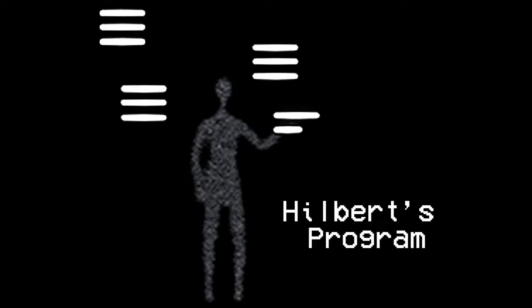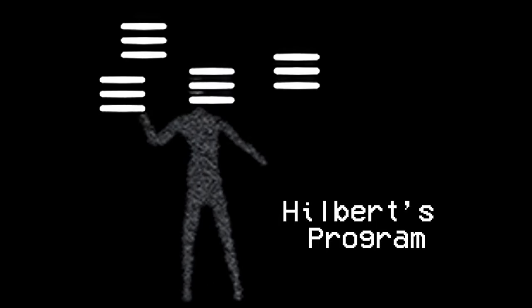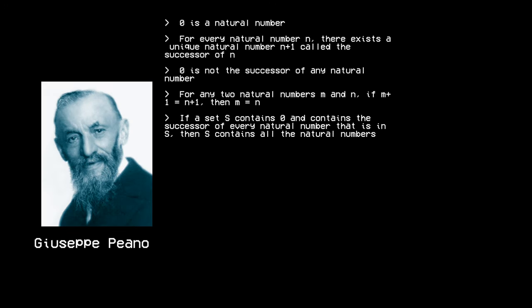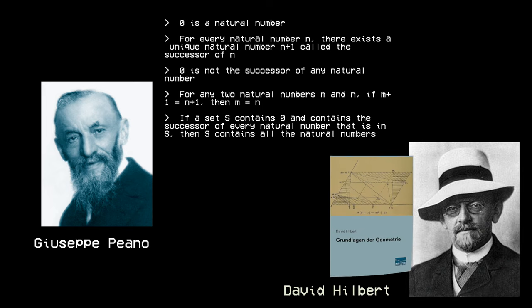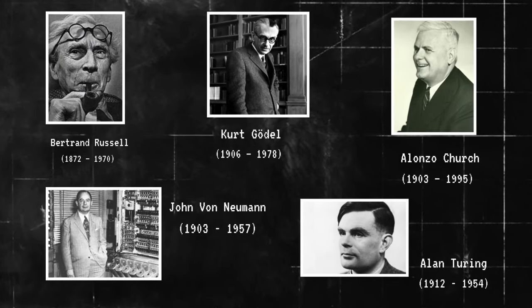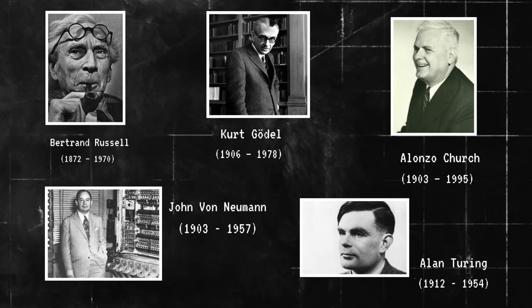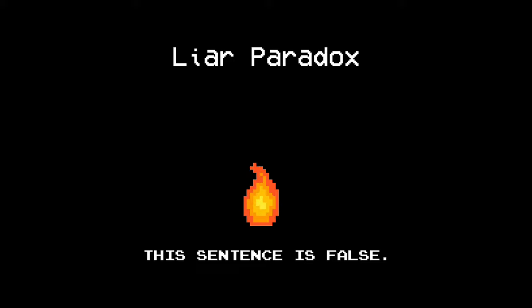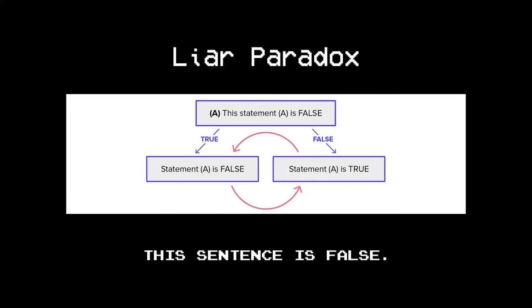Rebuilding mathematics in a way that satisfied the requirements of completeness and decidability became known as Hilbert's program. In 1889, Giuseppe Peano formulated axioms for arithmetic, and David Hilbert did the same for geometry. During the era of Hilbert's program, logic was marked by a tumultuous cycle of creation and destruction, where one logician would construct an elaborate system only for another to dismantle it. The preferred method of destruction involved crafting self-referential, paradoxical statements that exposed inconsistencies in the axioms, such as the liar's paradox, exemplified by the sentence: "This sentence is false." If true, the sentence is false, and if false, it is true, creating an endless loop of contradiction.